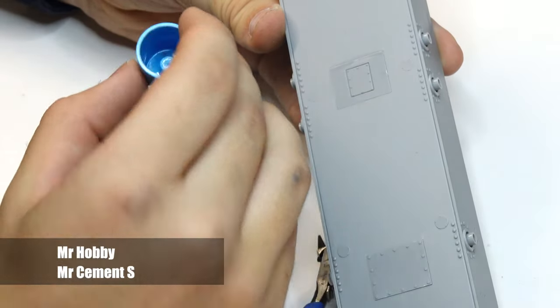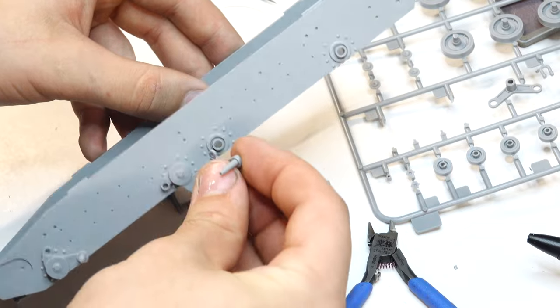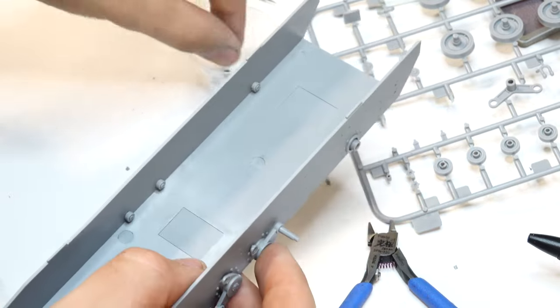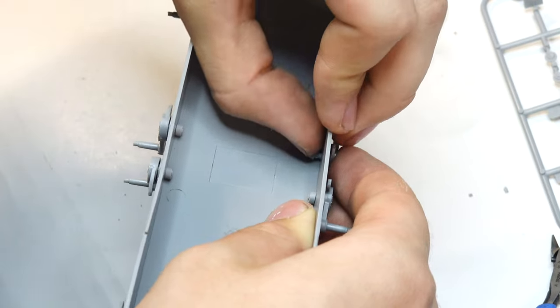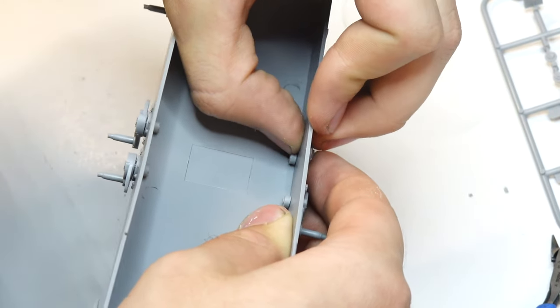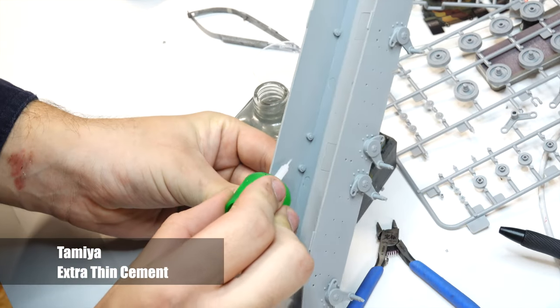For gluing pieces together, I'm a big fan of using Mr. Cement S, as it dries much faster than standard cements. Since the suspension is fully workable, I'm putting on these caps by gluing the whole thing together. To make sure this doesn't fall apart later on, I'm putting the tiniest amount of glue at the end of the cap.